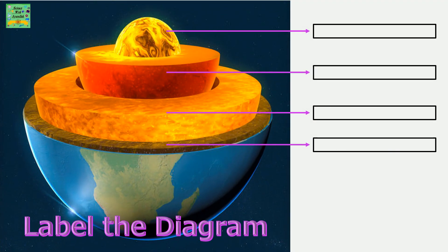Now please try labeling the diagram. The top one is the innermost layer. Just beneath it is the second innermost layer. Then comes the third innermost layer, and then the outermost — core, mantle, and crust.